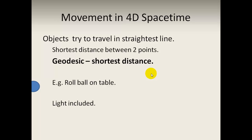Einstein said that objects try to travel in the straightest possible line in four-dimensional space-time. The shortest line between two points is a straight line if the geometry is flat. We use the term geodesic for this shortest distance. For example, if you roll a ball on a table it will go in a straight line because the table is flat — it follows a geodesic. Light also travels in a straight line in Euclidean four-dimensional space-time. Einstein predicted this, and so did Newton.